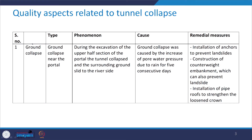The first one is related to ground collapse, and ground collapse can be of different categories. First we discuss the type when the ground collapses near the portal. During the excavation of the upper half section of the portal, the tunnel collapsed and the surrounding ground slid to the river side. The ground collapse was caused by the increase of the pore water pressure due to rain for 5 consecutive days.